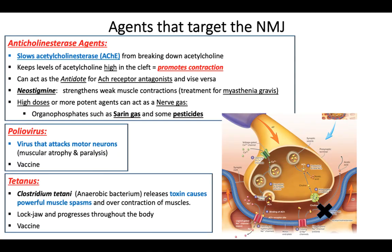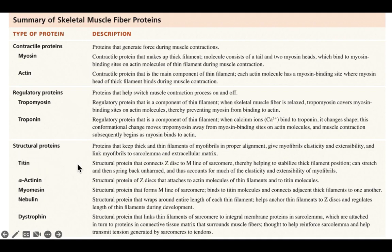Let's go through this one quickly — it's just a bunch of text, but you should notice that we've learned about most of these proteins: myosin, actin, tropomyosin, troponin. We have some other structural proteins — alpha actinin and myomycin. We haven't really talked about titin — this is a big structural protein of the sarcomere.